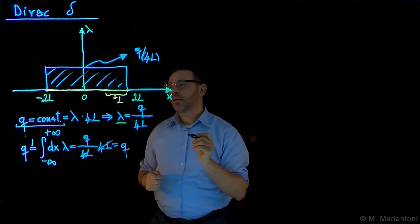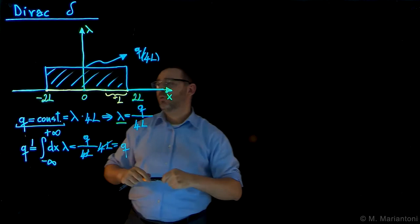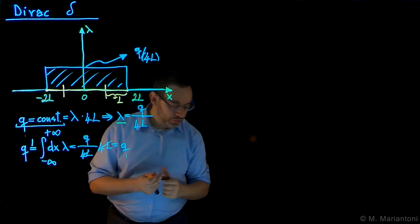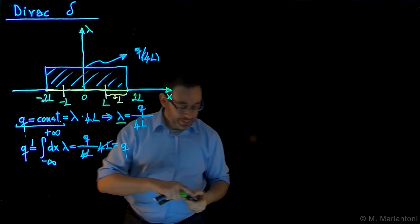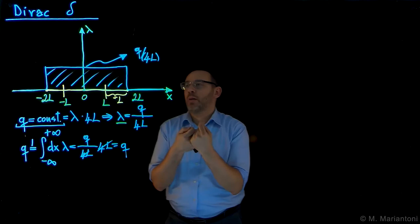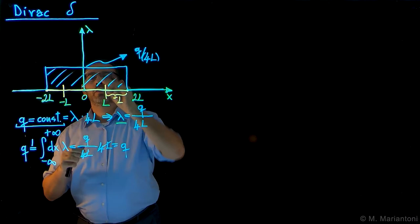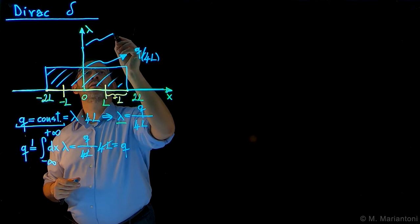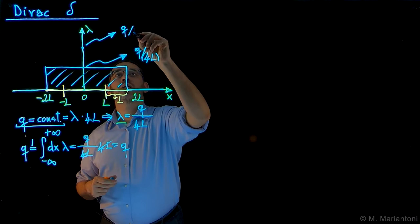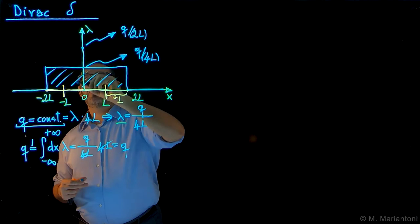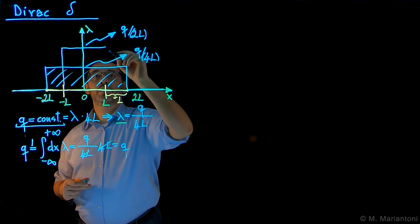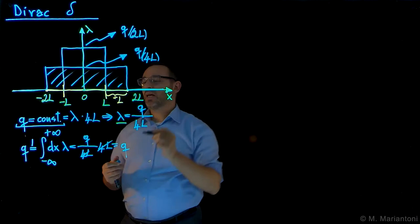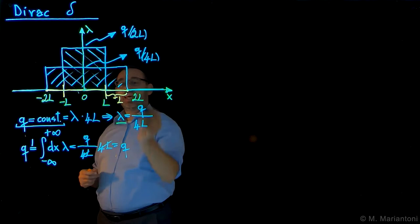Now we want to keep Q constant while diminishing the size of this segment. For example, we stop our segment at minus capital L and plus capital L, so the segment is one half as long. In order to maintain the same charge, the lambda has to become two times as large. So lambda will now have a value Q divided by two times L — two times as large. The rectangle now has a base of only two capital L and a height of Q over two capital L. Performing this integral, we again obtain the same charge Q.